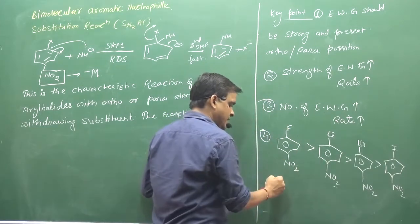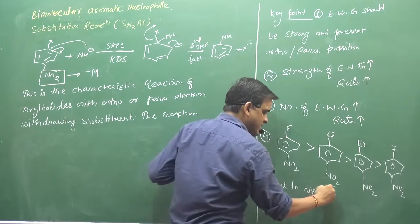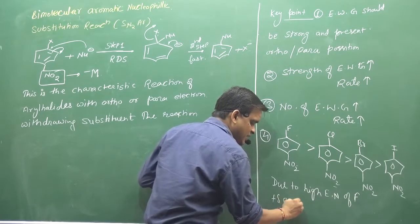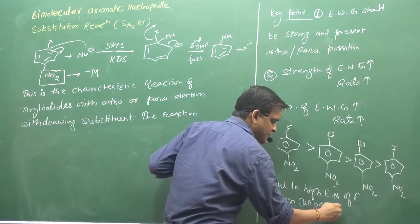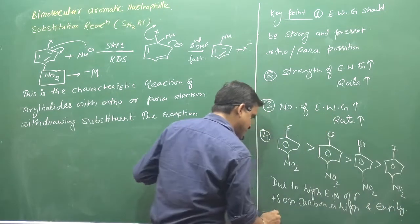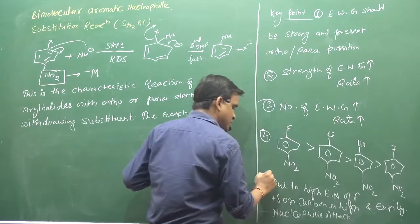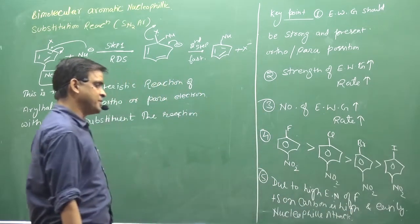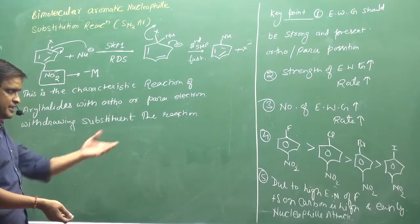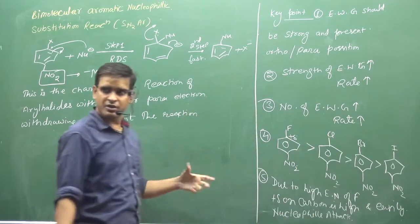What is the reason for fluorine being the best leaving group here? Due to the high electronegativity of fluorine, the positive delta charge on the carbon is high. This makes nucleophile attack easier. Due to the high electronegativity of fluorine, the plus delta charge density on the carbon attached to fluorine is high compared to other halogens. So the nucleophile will preferentially attack that carbon.